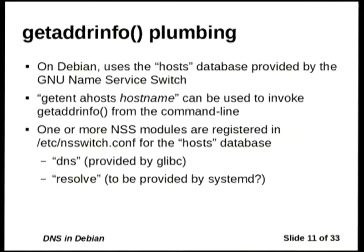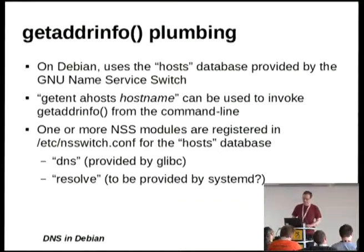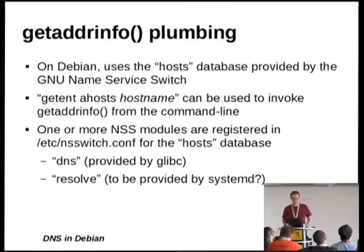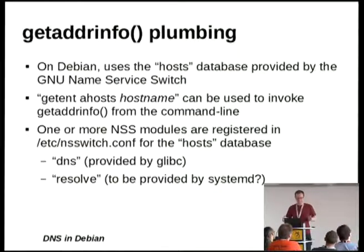The plumbing for this interface is interesting. The name service switch is an abstraction layer deep in the C library, glibc. You can run the getaddrinfo function with a command line that has at least DNS — this is the default we've always used for years — that actually goes out and does DNS lookups and returns them through the getaddrinfo interface.